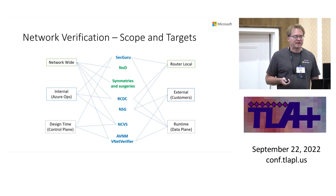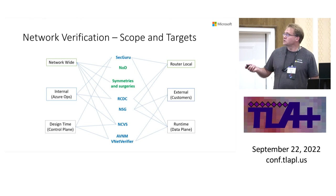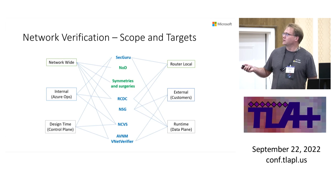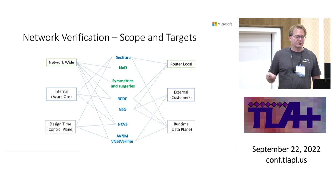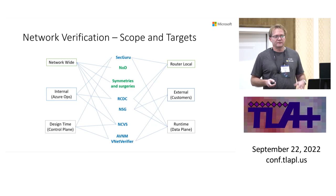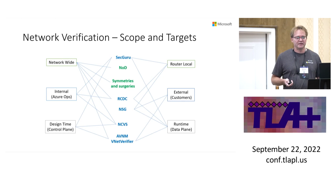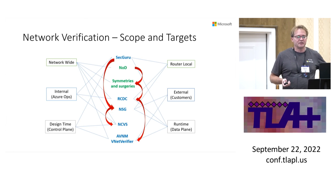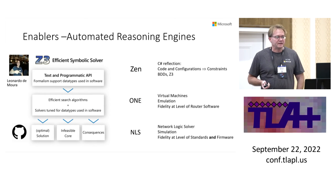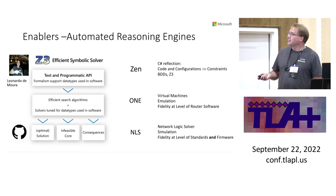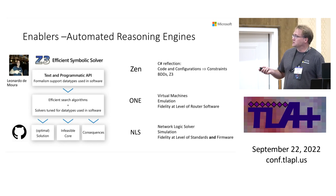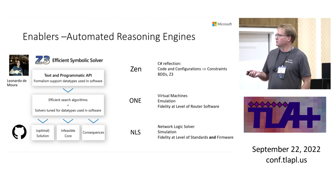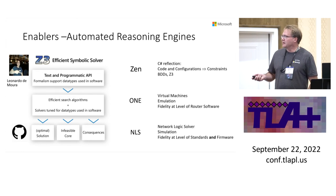We have multiple targets for network verification and tools developed. The blue ones are tools we deployed, and the greens are papers. The targets are network-wide or router-local, internal or customer-facing. There's a notion of whether you check things at runtime in the data plane or via the control plane configurations. The main tools are symbolic solving, SIN, the network crystal — open network emulator and network logic solver.